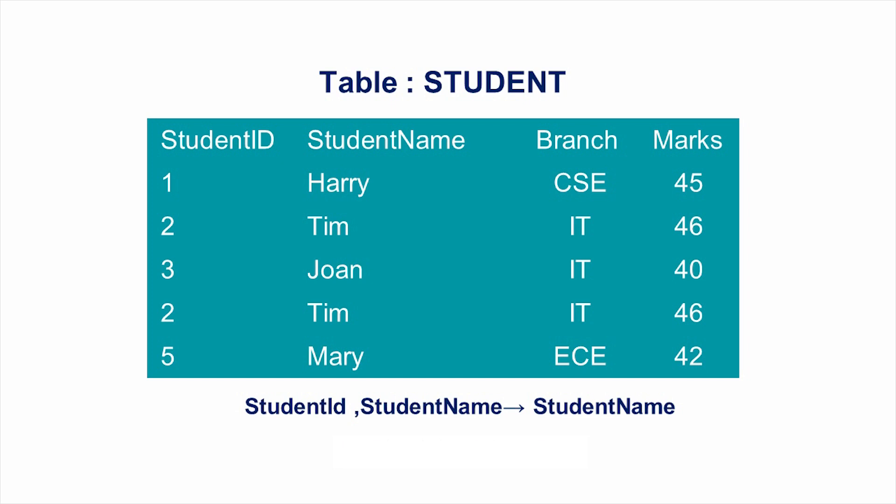Similarly, student_id determines student_id is also a trivial functional dependency.